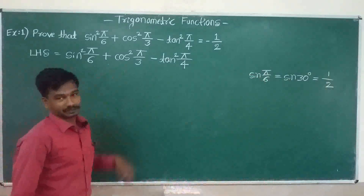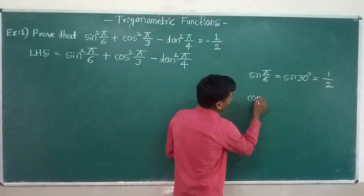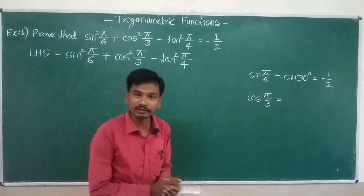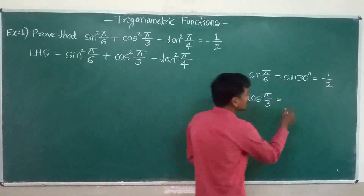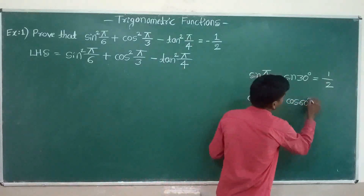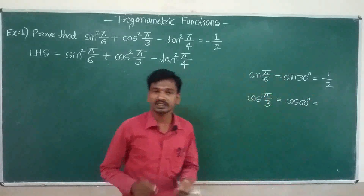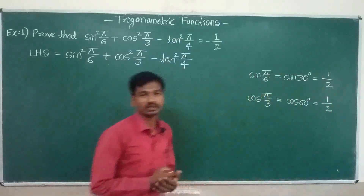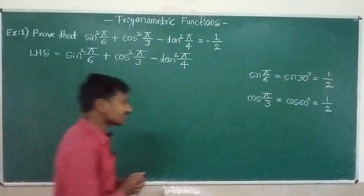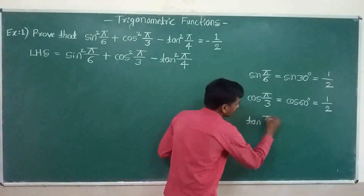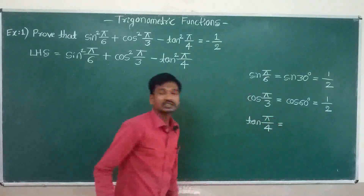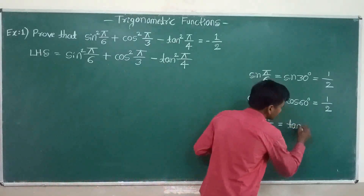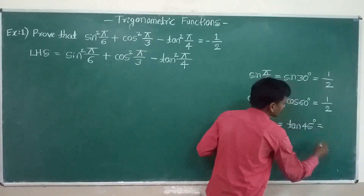Next, we get cos pi divided by 3. Cos of pi divided by 3 — pi divided by 3 is 60 degrees — cos 60 degrees. The table value of cos 60 degrees is 1 divided by 2. Next, the table value of tan pi divided by 4 — pi divided by 4 is 45 degrees — tan 45 degrees is equal to 1.